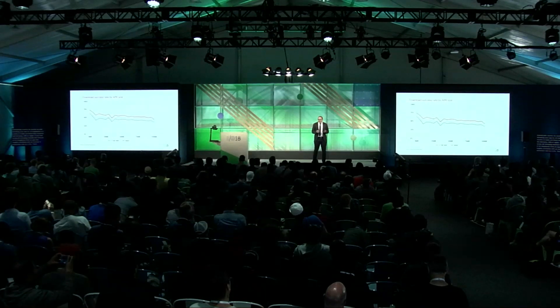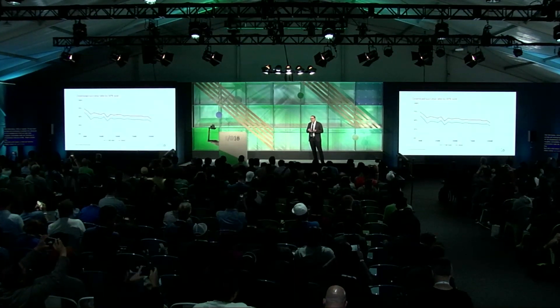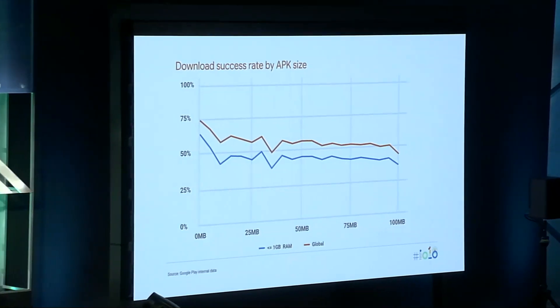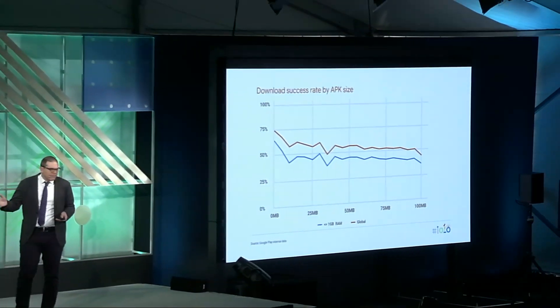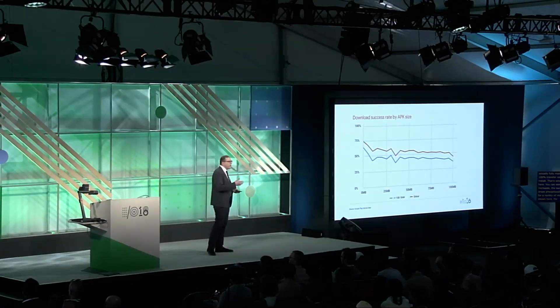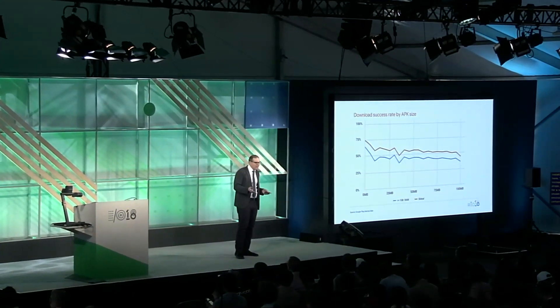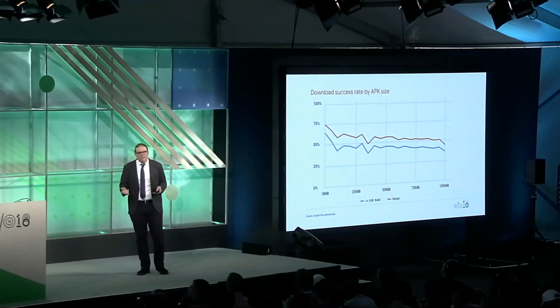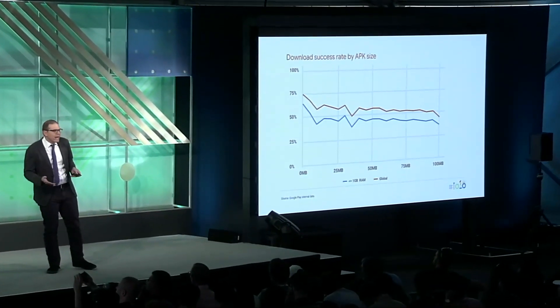Let's drill down a little bit further. We also measure what happens after a user taps install — they still have to download the app. So we can measure what percentage of apps by size actually fully make it to the device with a 100% transfer rate and are ready for install. As app size increases, the success of a download drops precipitously. This could be for environmental reasons — in certain parts of the world, network quality isn't as reliable as we would like — or perhaps the user gets tired of waiting for a large app to download, or they see just how large the app is and decide to cancel.